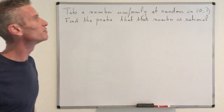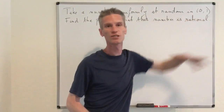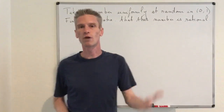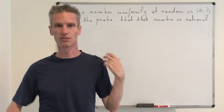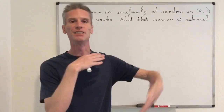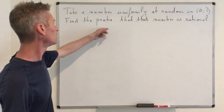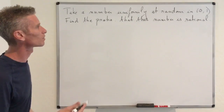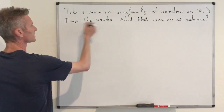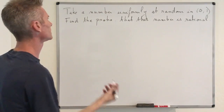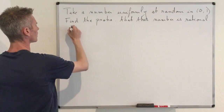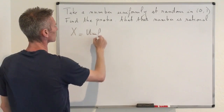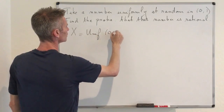You take a number uniformly at random in the unit interval [0,1] and the goal is to find the probability that this number is rational — meaning it can be written as a fraction of one integer divided by another. If you know a little bit about probability theory, the way we solve this is by letting x be a random variable, and we say that x is uniform on the interval [0,1].